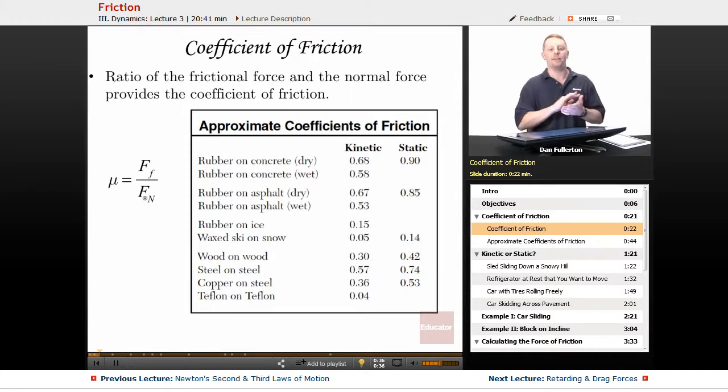So friction is caused by the interaction of two objects, and this coefficient of friction depends on the nature of the surfaces.